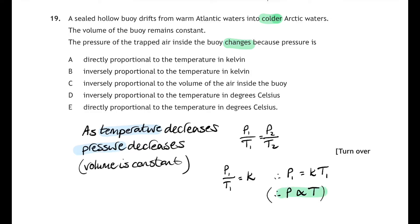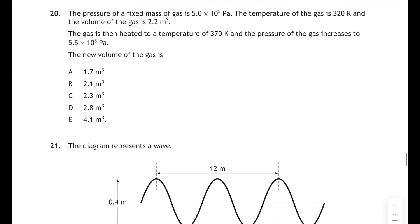Question 20: pressure of a fixed mass of gas is 5 times 10 to the 5 pascals, its temperature is 320 kelvin, and the volume is 2.2 cubic meters. The gas is then heated to a new temperature of 370 kelvin, and the pressure of the gas increases to 5.5 times 10 to the 5 pascals. We have to work out the new volume of the gas. Well, all three things are changing here—pressure, temperature, and volume—so we're going to need to combine the gas law equation here.